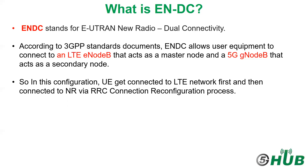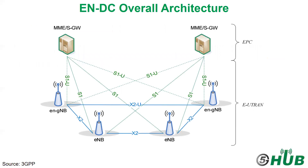What about the architecture of EN-DC dual connectivity? This is the 3GPP overall architecture. The overall architecture of EN-DC can be illustrated in the figure as per 3GPP technical spec 37.340. As you see here, the user equipment is communicating with both LTE and also with New Radio gNodeB radio site. All the signaling and data communication are going through the LTE core network — including the MME and serving gateway.